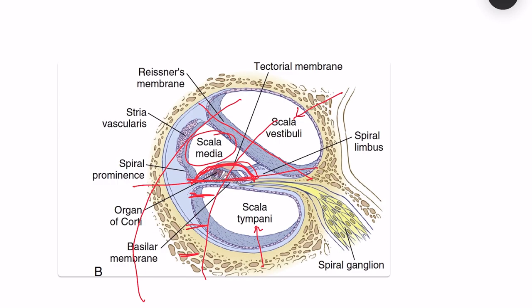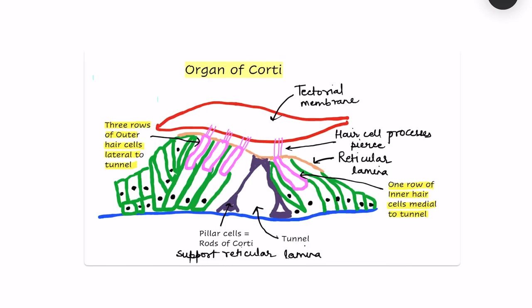Now let's move into the organ of Corti structure. This is the basic structure of the organ of Corti. The blue line represents the basilar membrane — the organ of Corti sits on the scala media, which is bounded on top by Reissner's membrane and below by the basilar membrane. On the top of the organ of Corti there is not Reissner's membrane but rather another membrane — the tectorial membrane.